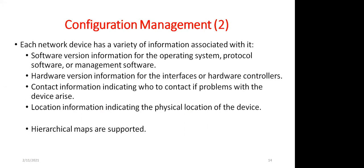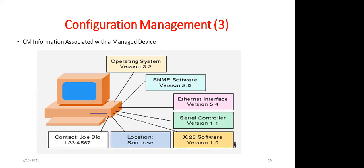Configuration Management requires monitoring network and system configuration information and storing it in a database. This includes how many interfaces are configured, how many processes are running, what devices are connected, whether it is hardware or software information. It also requires support for hierarchical maps — for example, campus-wise views where selecting a lab gives its detailed configuration.